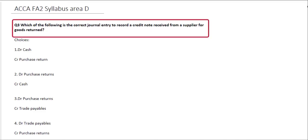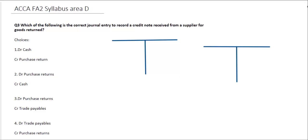The last question relating to Syllabus Area D asks which is the correct journal entry to record a credit note received from a supplier for goods returned. We know we need to use our Trade Payables account, where we record all transactions relating to credit suppliers. When recording the original invoice, we record a liability on the credit side of Trade Payables, so any credit notes are going to go on the debit side to offset the original invoice.